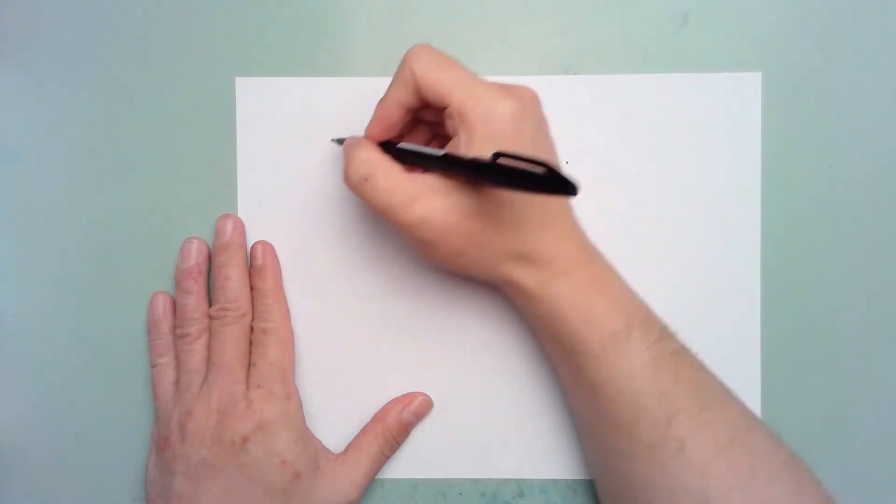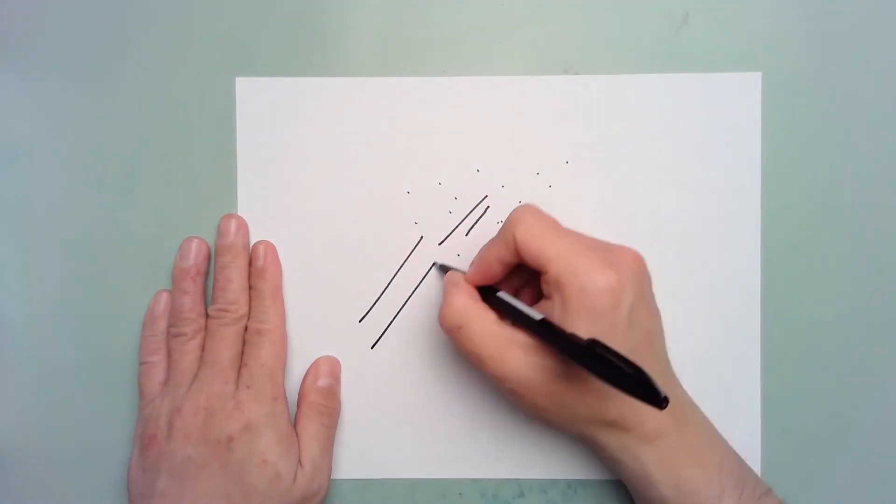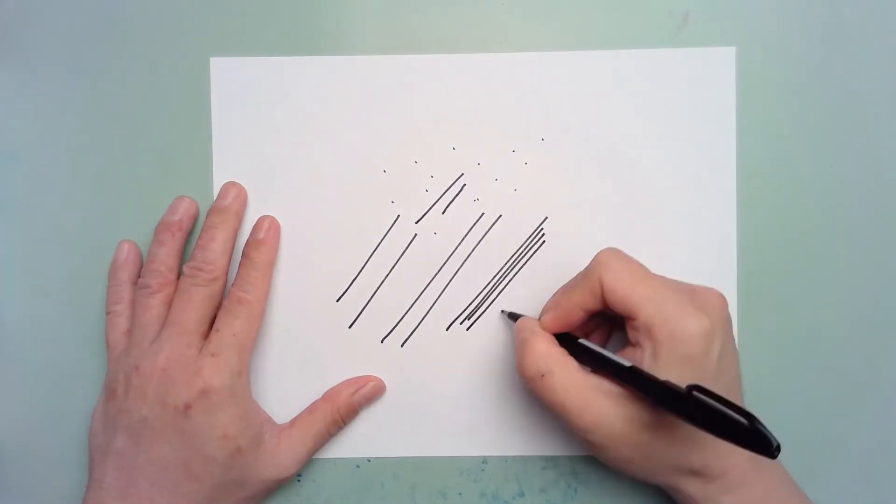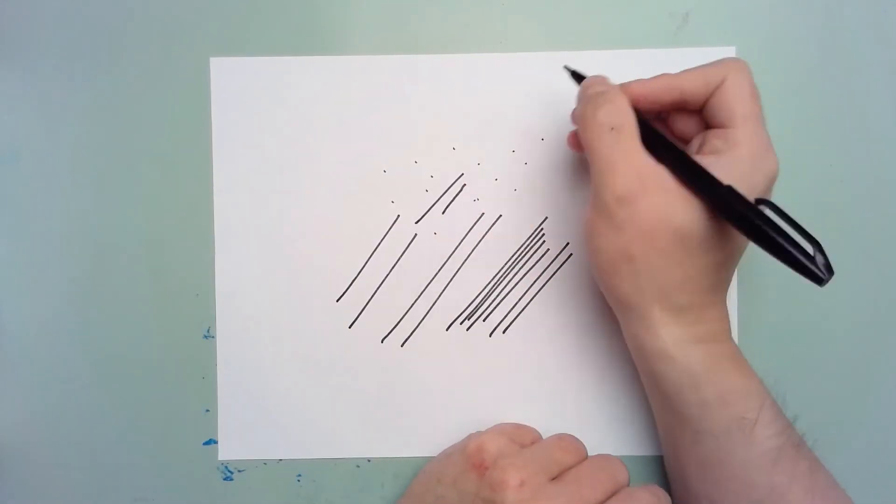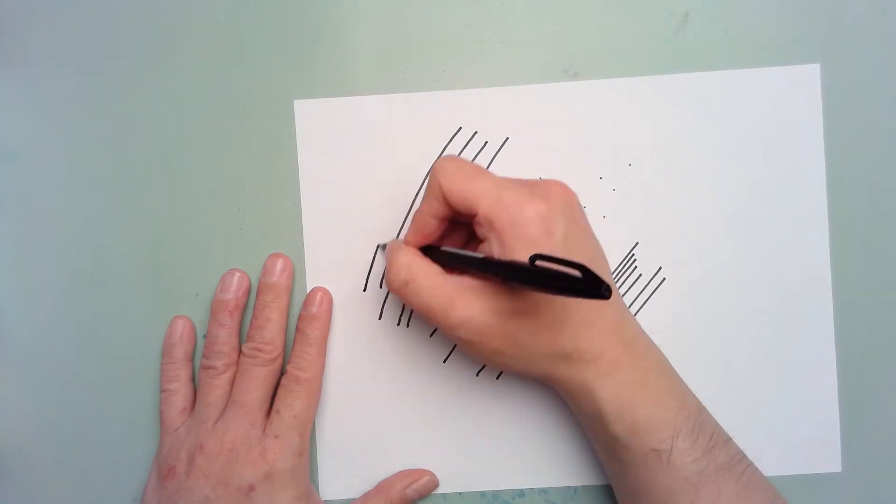Another good habit to develop is to lock your wrist when you draw. You will definitely want to avoid limp-wristing while you draw, as this would result in unintentionally curved lines.